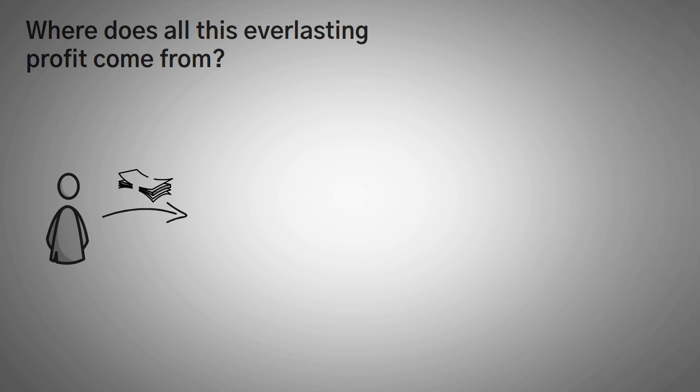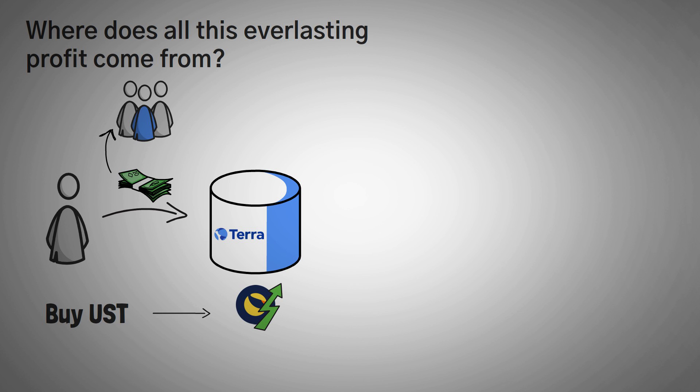Now, you might be wondering the same question that I was wondering. Where does all of this everlasting profit come from? That is a great question. And here's what I found out. The profit seems to come from money flowing into the ecosystem. As more and more people buy UST, Luna will grow in price. Although it does seem to happen that a small portion of this profit goes to those who help keep UST stable. However, when people start taking their money out of the ecosystem, Luna will fall in price. So the value is taken from people who hold the Luna token. Now, this brings us to another question. Why on earth would you hold Luna?